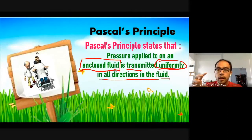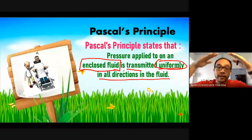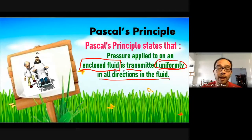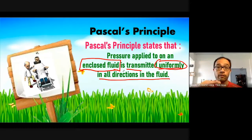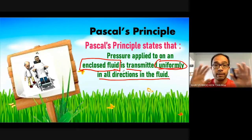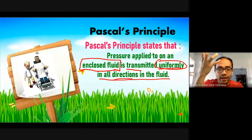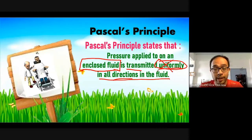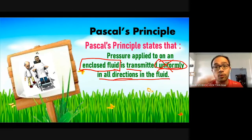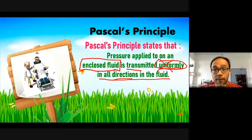When you go up and down in the chair, you don't suddenly drop — you will slowly drop, very uniformly, because the pressure is being transferred very uniformly in all the directions of the fluid. If the pressure is not transferred uniformly, then dia tekan saja satu butang, terus kau terjatuh macam tu — which we don't want. Those are basic applications of Pascal's Principle.